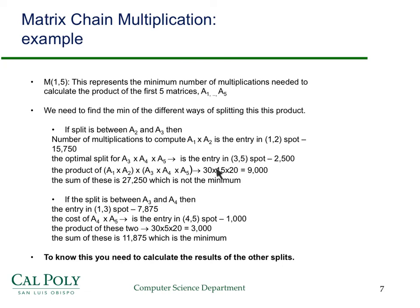That turns out not to be the minimum, but just wanted to go through the computation. If the split is between A3 and A4, then we use the entry in the 1,3 spot — that's the matrices A1, A2, A3. The cost of multiplying A4 times A5 is the entry in the 4-5 spot, which is 1,000. And then the product of these two, which is 30 times 5 times 20, that's 3,000. The sum of these is 11,875, which is the minimum. We have to compute many more of these to fill in the entry in the 1,5 position.